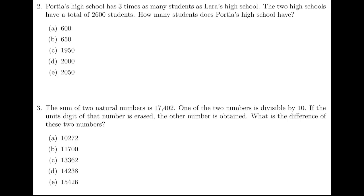Question 2. The ratio of the number of students in the two high schools is 3 to 1. So altogether 4 portions, and that's 2,600 students. So the number of students in Porteous High School is this number times 3 over 4, and that's 1950. So the answer is C.